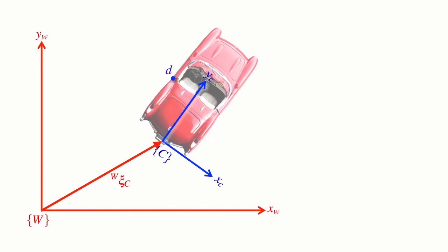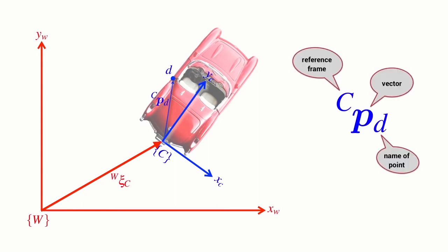Now let's look at just a single point — one of the points on the door of the car. I'm going to label that point D. We create a vector from frame C to this point D, and we denote that in the way we've already discussed. We use the symbol P to denote that we're talking about a vector. C is the reference frame, so this is a vector with respect to frame C. It begins at the origin of frame C and goes to the point D.